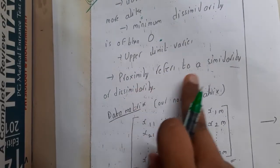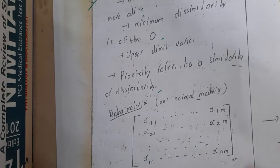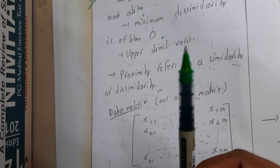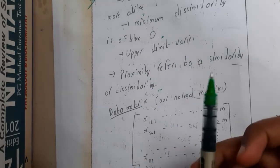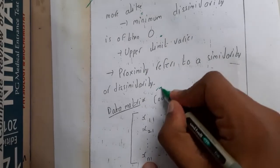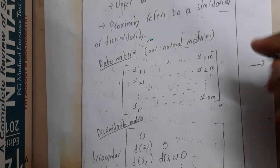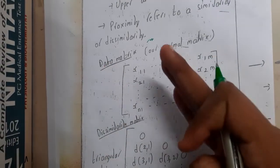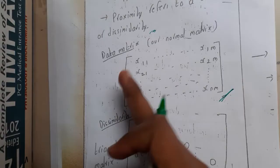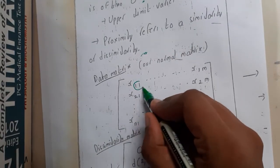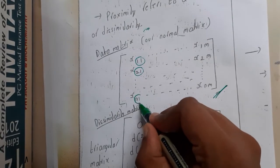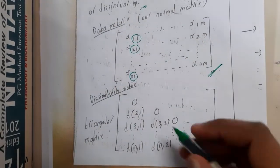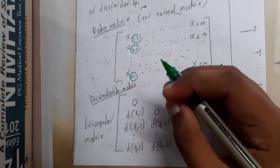Proximity refers to similarity or dissimilarity — in most lectures or examinations when they ask you to measure the proximity of items or a dataset, they are asking you to calculate similarity and dissimilarity. Whatever data we are representing will be in the form of matrices. When checking dissimilarity of any two items — dissimilarity of one with one, two with one, and so on up to n with one — you check the whole table.